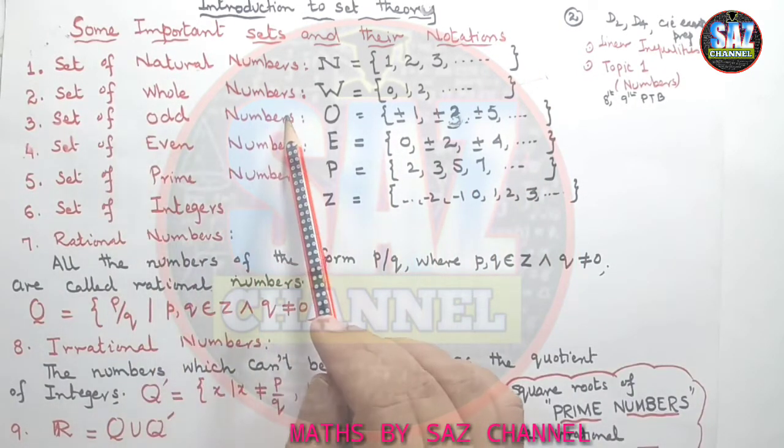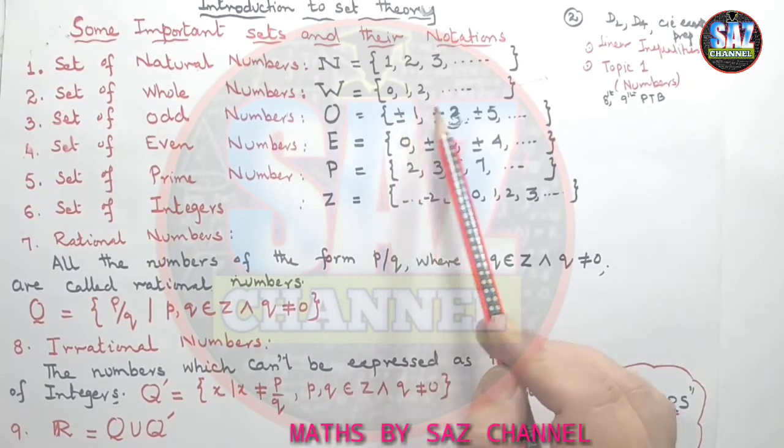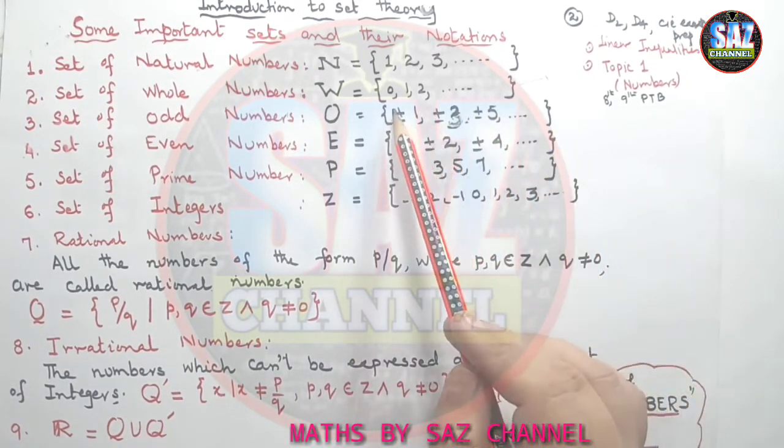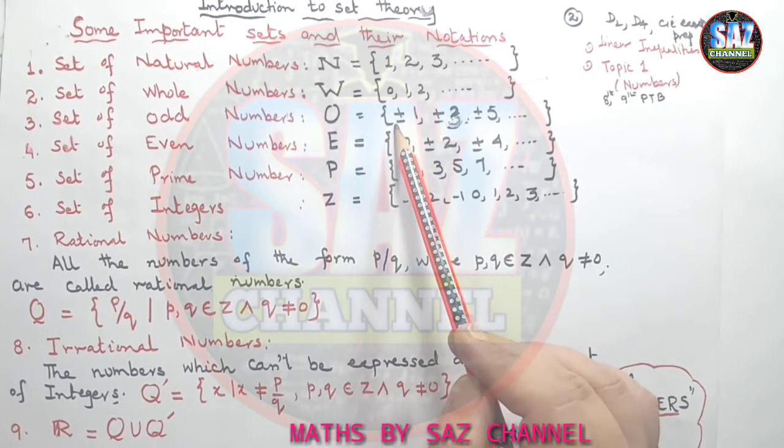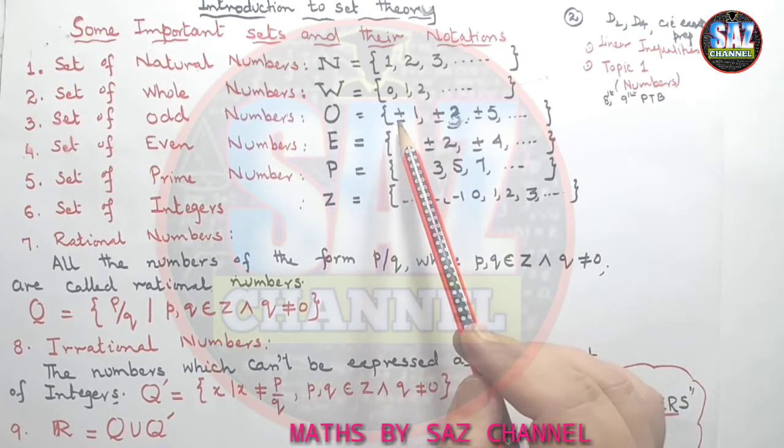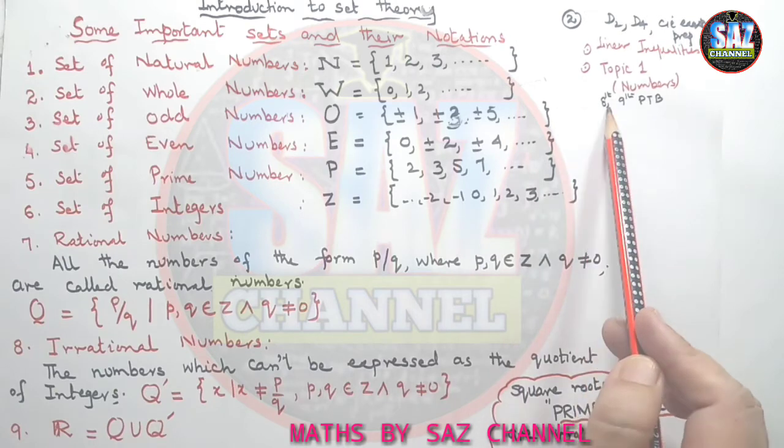Then coming to set of odd numbers, we can have the positive odd numbers and we can have the negative odd numbers. Odd numbers are the numbers which when we divide by 2, we have the remainder 1 and the elements are plus minus 1, plus minus 3, plus minus 5 and so on.